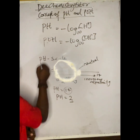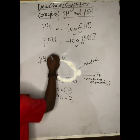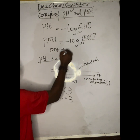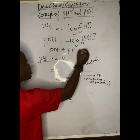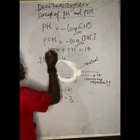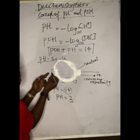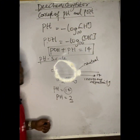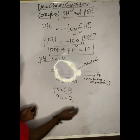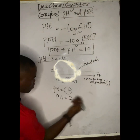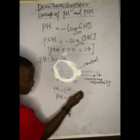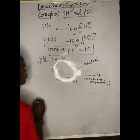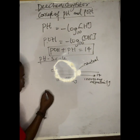Take note of this: pOH plus pH equals 14. This is very important — you can see the scale runs from zero to fourteen. pH of zero means highly acidic, while pH of fourteen means highly alkaline.